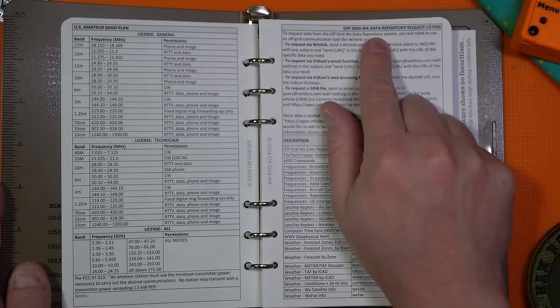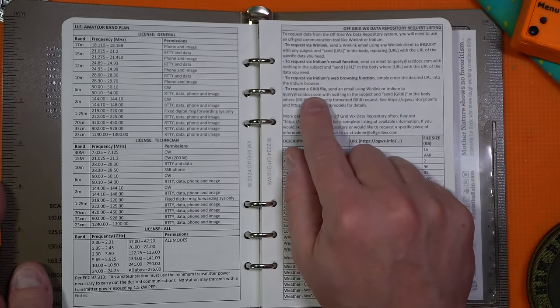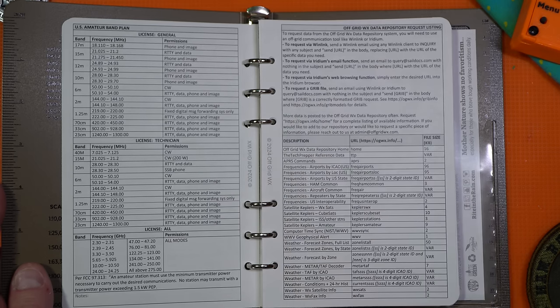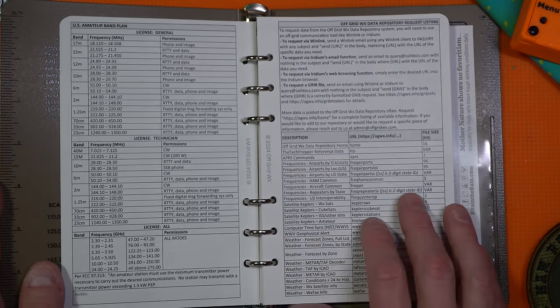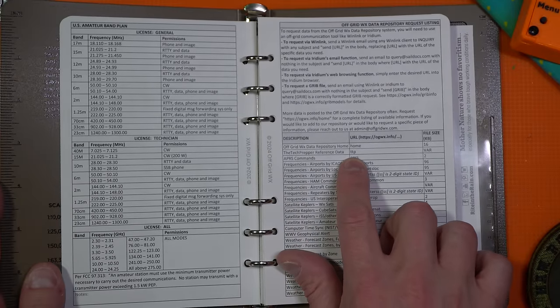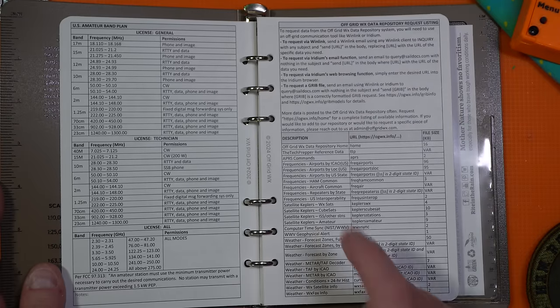Breaks down off-grid weather data repository. You can do Winlink, Iridium. I don't know what a GRIB file is. That's SailDocs. And then check this out. So you can add things like the tech prepper reference data. There you go. You can do TPP to the URL, and you can get whatever you need here for Keplers, for HAM common radios, for as far as frequency is concerned, weather updates.